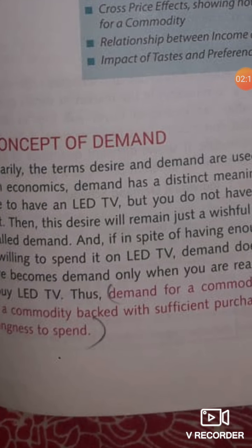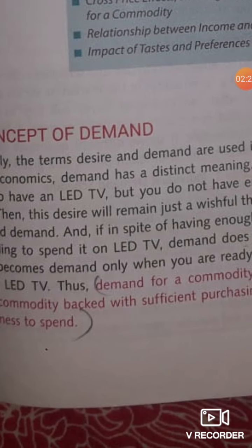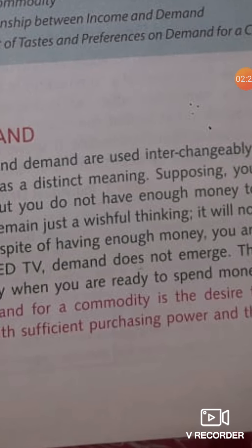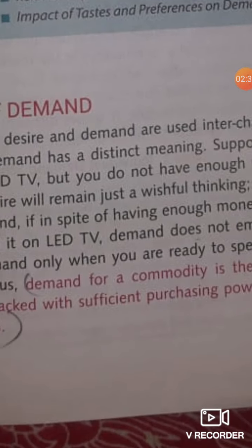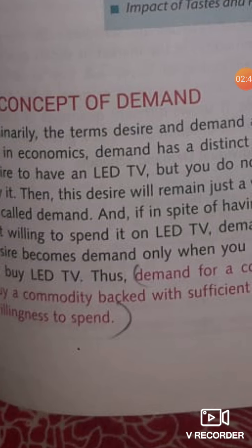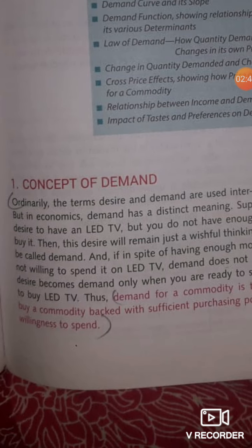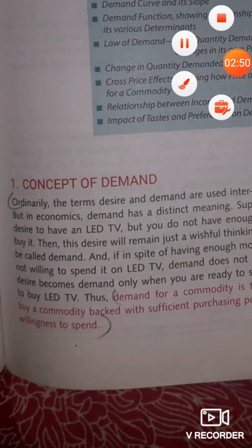So for demand, all three things must be present. First, there must be desire to purchase a commodity. Second, it must be backed by sufficient purchasing power — you must have the money to buy it. Third, you must have the willingness to spend that money on that particular commodity.